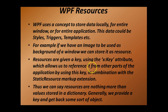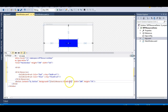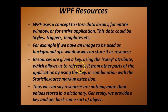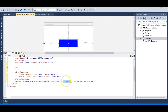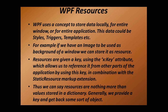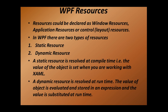Looking at our slides: resources are given a key using the x:Key attribute, which allows us to reference them from other parts of the application by using this key in combination with the StaticResource markup extension. Resources are nothing more than values stored in a dictionary - we provide a key and get back some sort of object. We give a key and get back the value red or blue - same concept as a dictionary. Resources can be declared as window resources, application resources, or control resources.